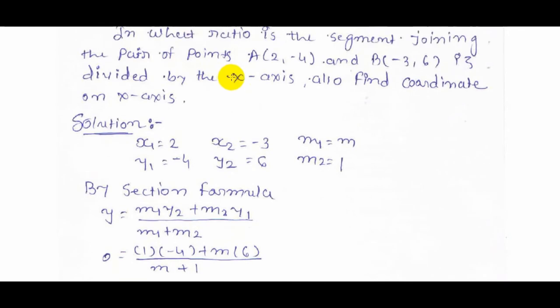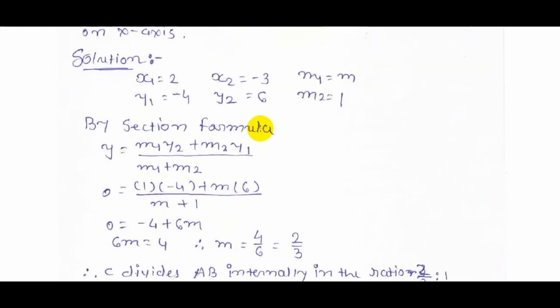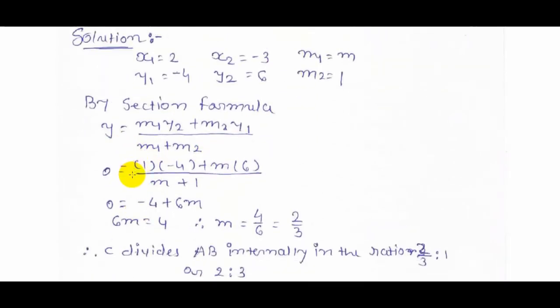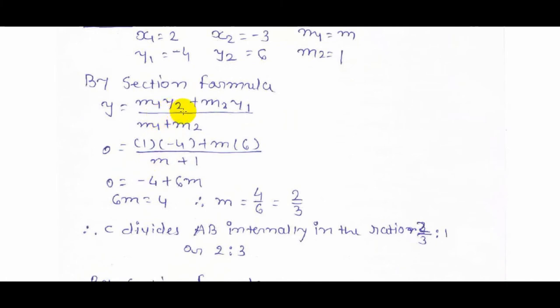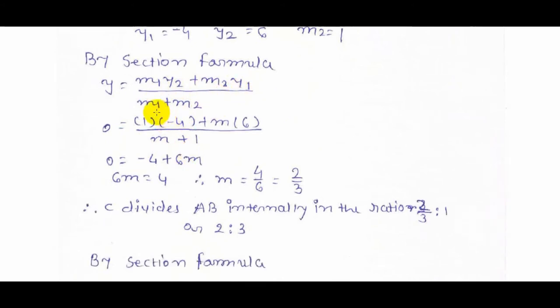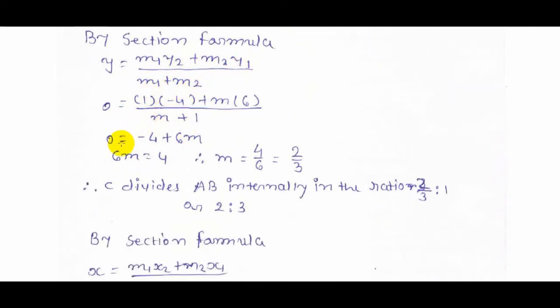Now put the values of m1, y2, m2, y1, and also m1 and m2. As a result we got: 0 = (1)(-4) + m(6) / (m + 1).